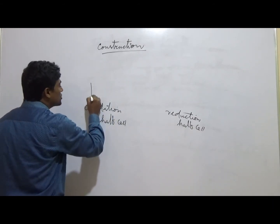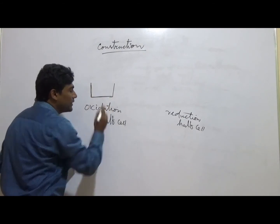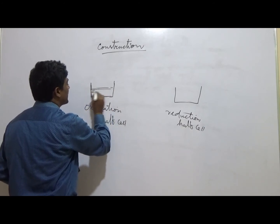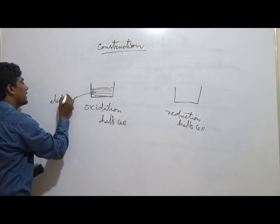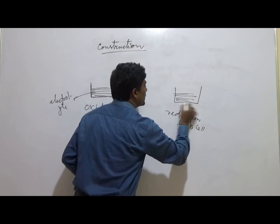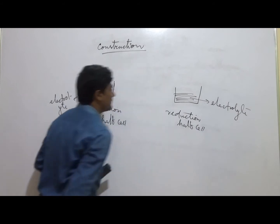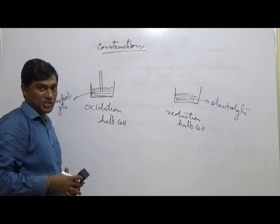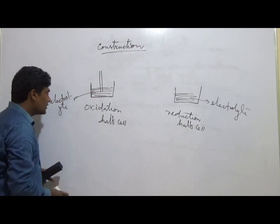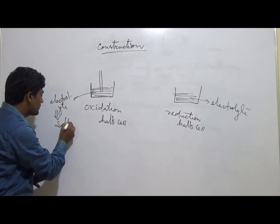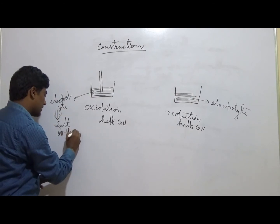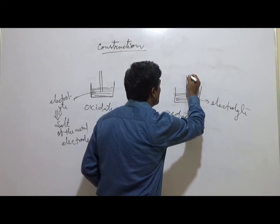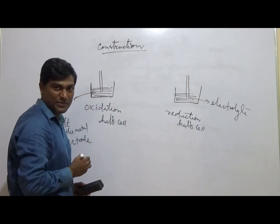How is a half cell formed? Any half cell — whether oxidation or reduction — consists of a vessel containing an electrolyte. Inside that electrolyte, we must dip one electrode, which is simply a piece of metal. The electrolyte should be a salt of the same metal as the electrode.